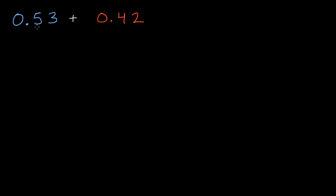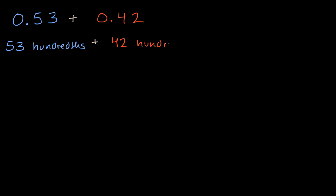One way to think about it is you could say that this is 53 hundredths. You could read this as either five-tenths and three-hundredths, or 53 hundredths. And to that, you're going to add 42 hundredths.